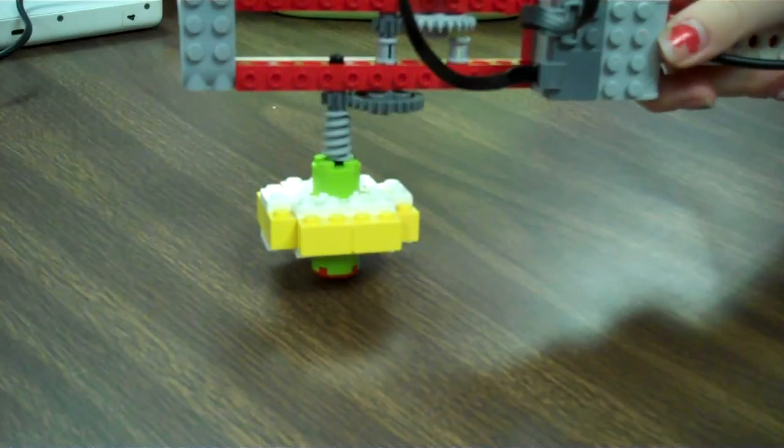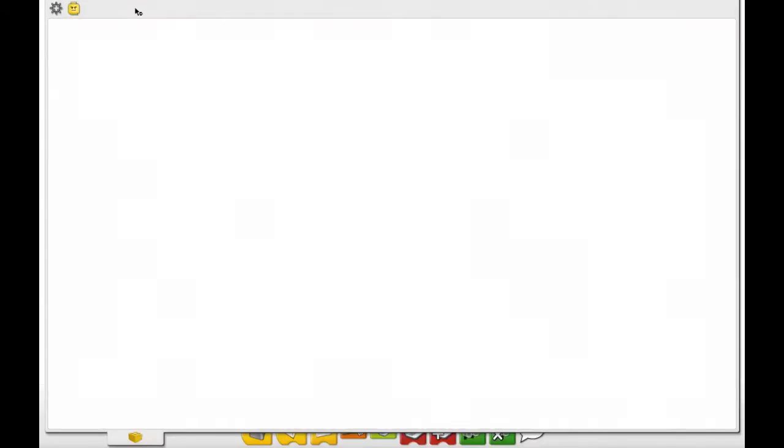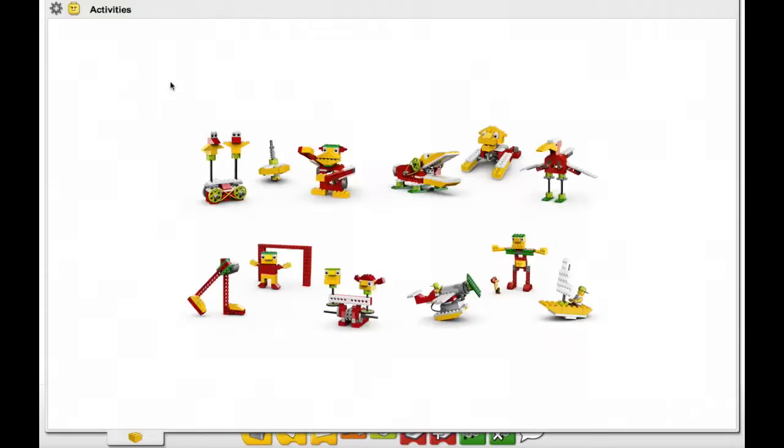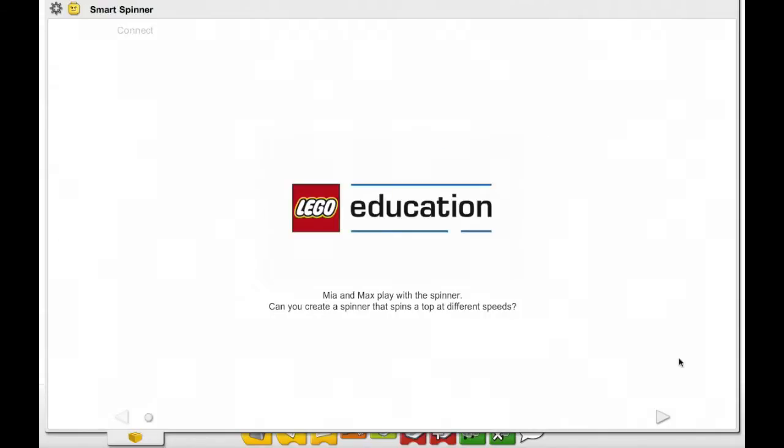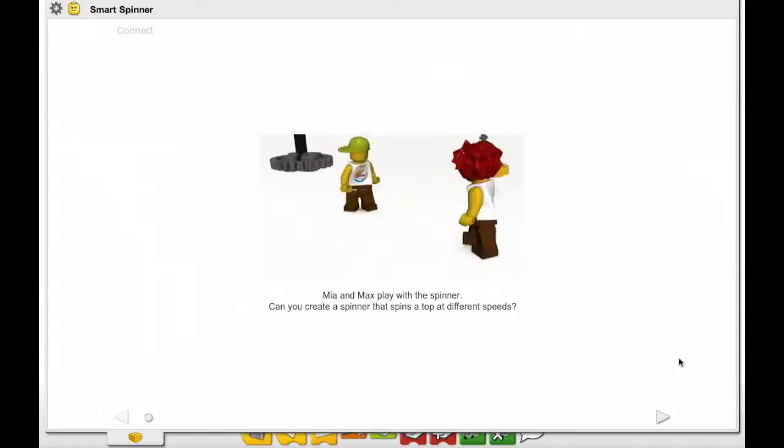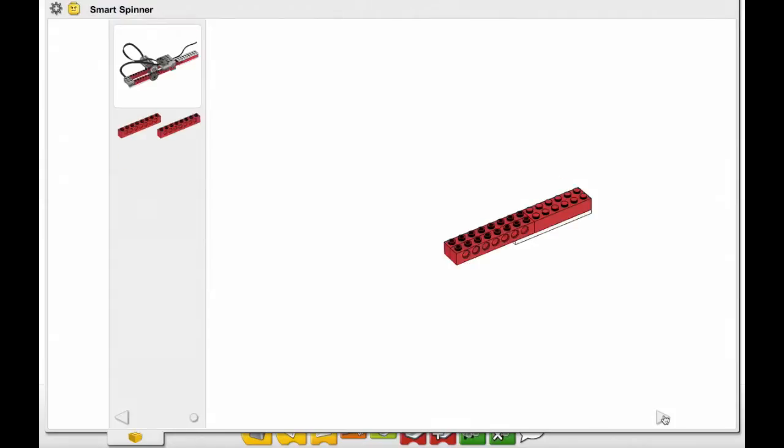And this is what your Smart Spinner will look like when it's built. If you weren't here for our last two tutorials, when you open the WeDo software, this is where you'll find the step-by-step building instructions. Choose the Smart Spinner model and watch the video if you want, and then follow the step-by-step directions on the screen by clicking on the forward or back buttons.